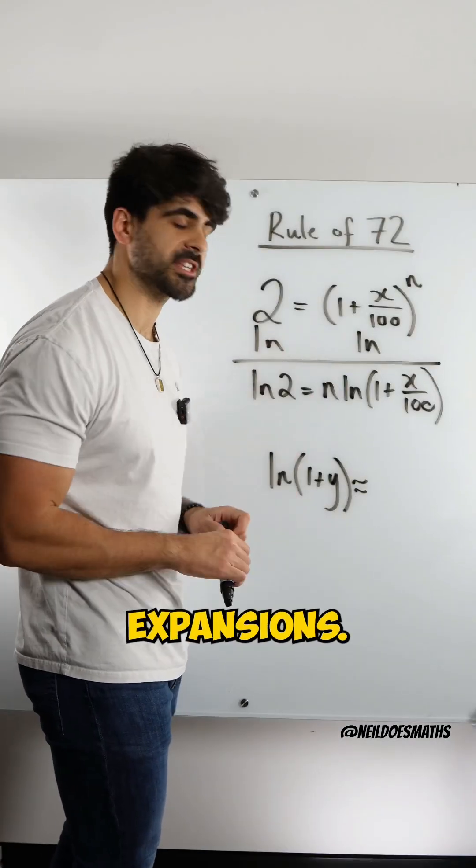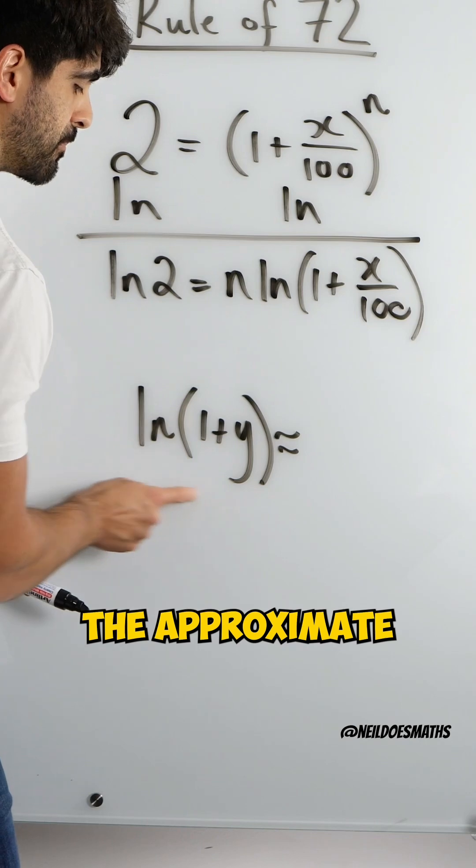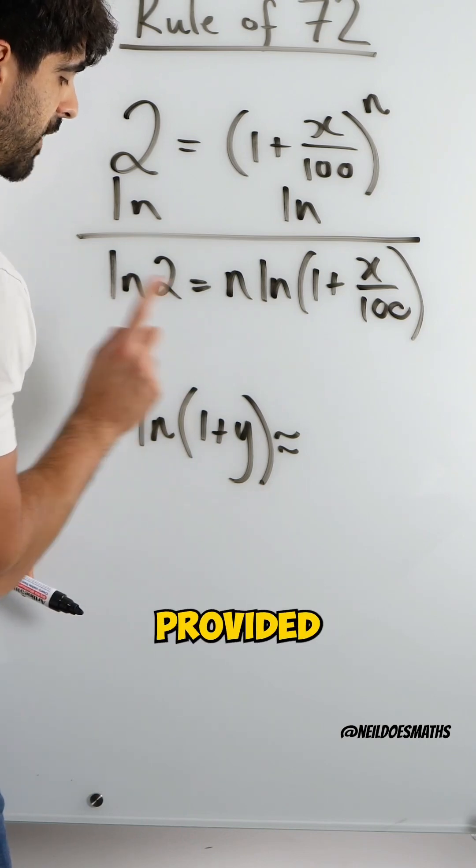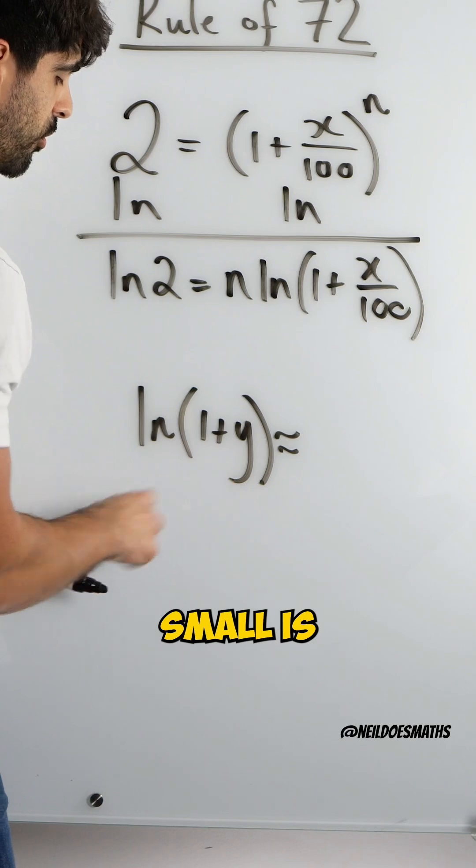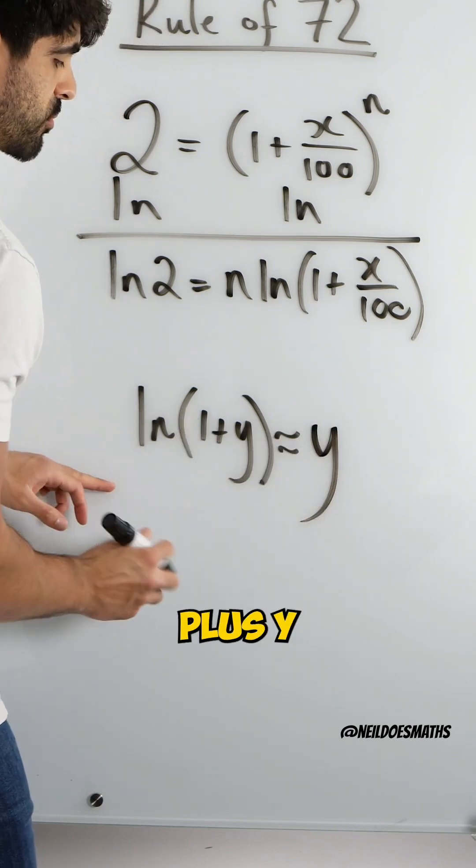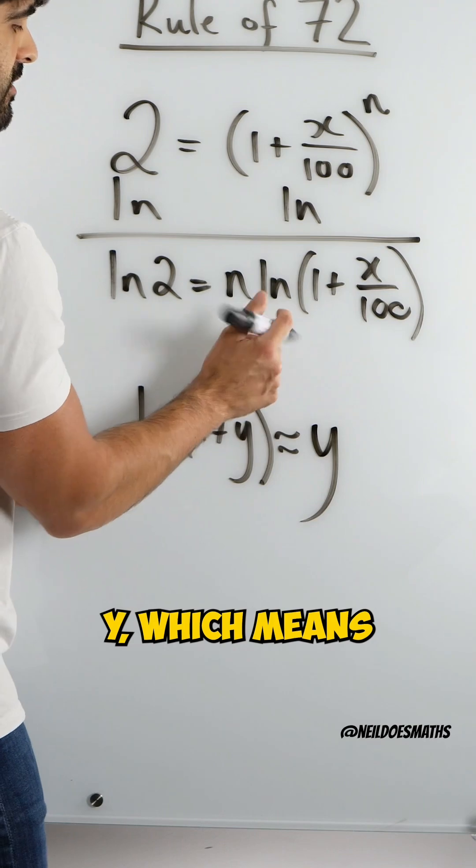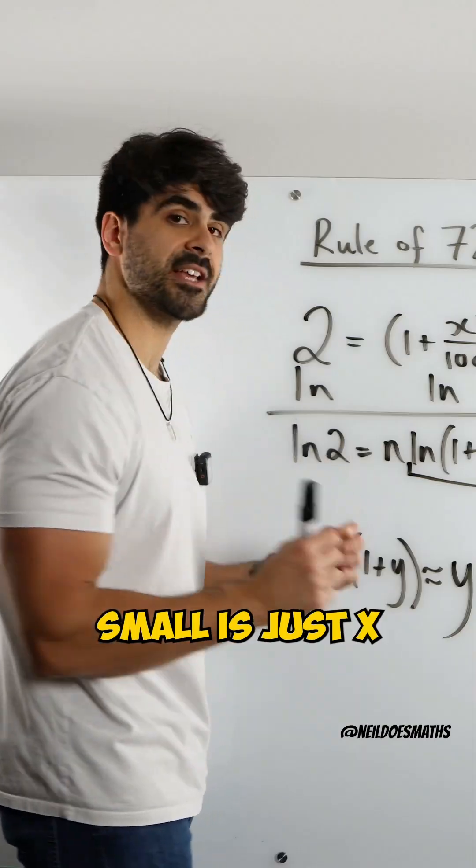The next thing we need to look at is Taylor expansions. The Taylor expansion, the approximate expansion for this function, provided that y is sufficiently small, is ln of 1 plus y is approximately y, which means this value is just x over 100.